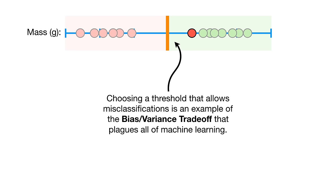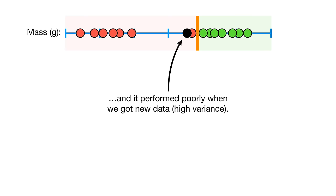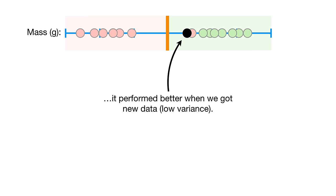Choosing a threshold that allows misclassifications is an example of the bias-variance trade-off that plagues all of machine learning. Before we allowed misclassifications, we picked a threshold that was very sensitive to the training data — it had low bias — and it performed poorly when we got new data, so it had high variance. When we picked a threshold that was less sensitive to the training data and allowed misclassifications, it had higher bias but it performed better when we got new data, so it had low variance.